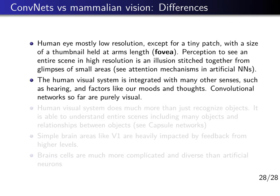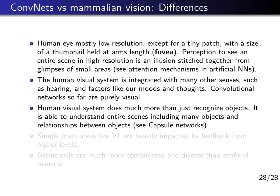Another important difference is that the human visual system is integrated with many other senses such as hearing, smell, and other factors like moods and thoughts. The language processing units in the brain are closely connected with the visual parts — when you read or hear a certain concept, your visual cortex generates an image of that object, and vice versa. These deep and complex connections between different brain functions have not been very much explored in artificial neural networks. Of course, the human visual system also does much more than just recognizing objects — it understands scenes and relates objects to each other both spatially and logically or functionally.